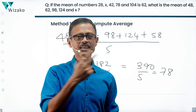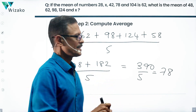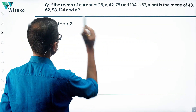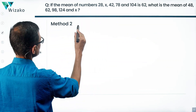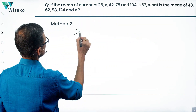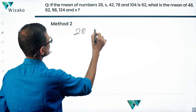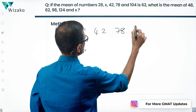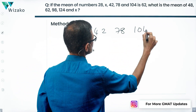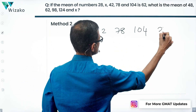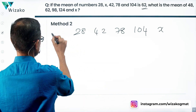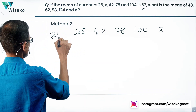Now we'll go to the second method. Sometimes being switched on really helps. I'm writing down the first set of numbers: 28, 42, 78, 104, x. For this, the average is 62. This is set one.